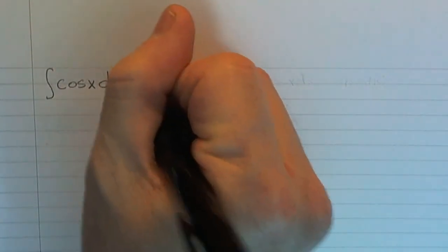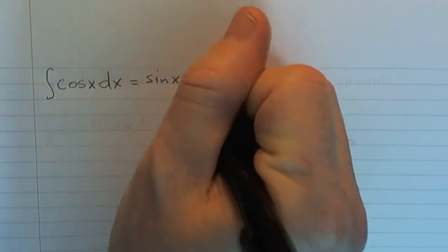And really, we just need to think back at what do you differentiate to get cosine? And remember, that's just sine. So we get sine x plus C.